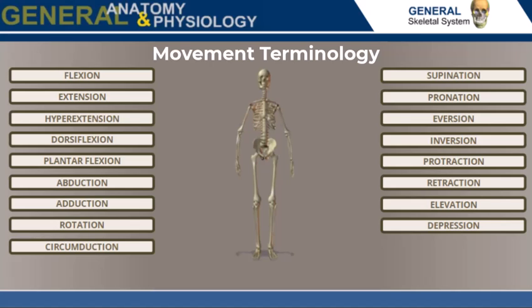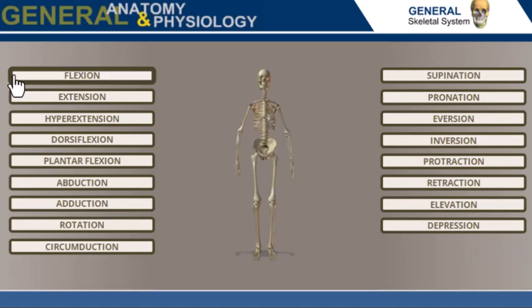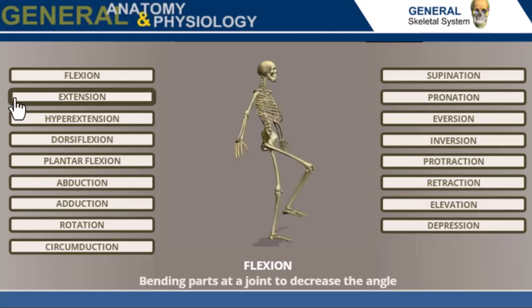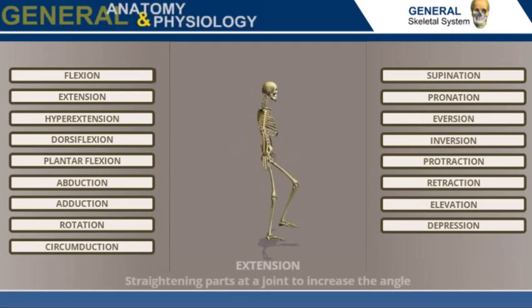Movement terminology. Let's look at each term and see an example of its movement. Flexion: bending parts at a joint to decrease the angle. Extension: straightening parts at a joint to increase the angle.